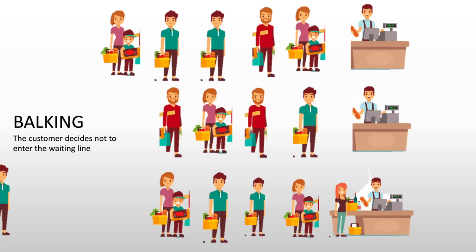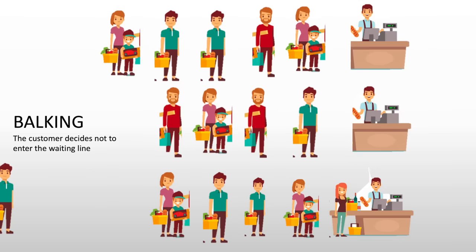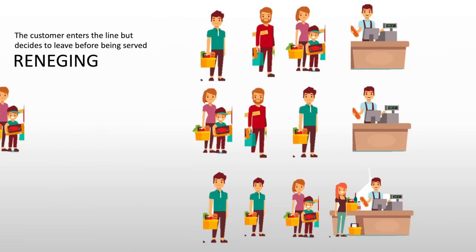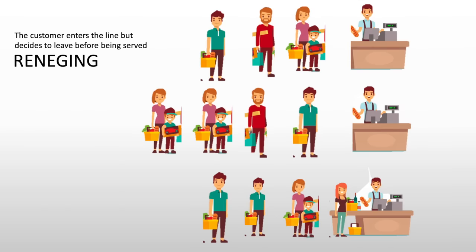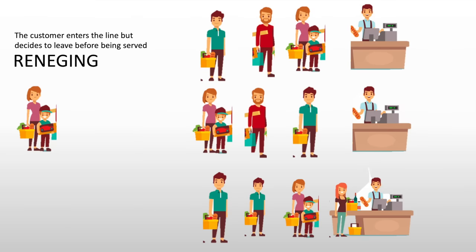The next one is called balking, where the customer decides not to enter the waiting line. For example, the guy in the green shirt sees that all the lines are quite long and doesn't want to wait, so he balks and decides not to enter the waiting line. And then lastly, reneging — reneging is when the customer enters the line but decides to leave before being served. For example, a mom and her little boy enter line number two but then decide to leave even before they were served. That reaction is called reneging.